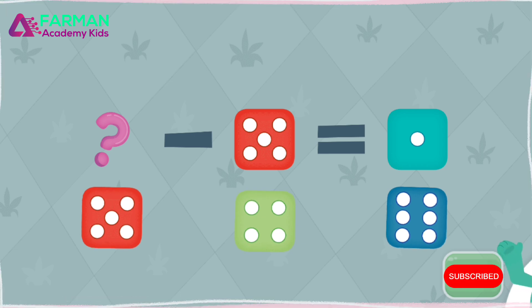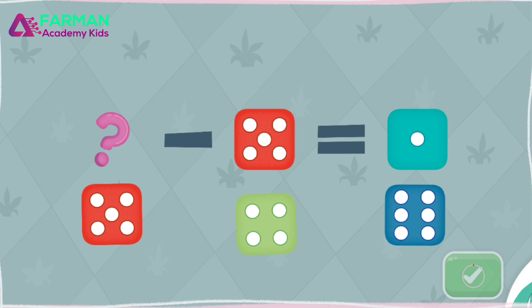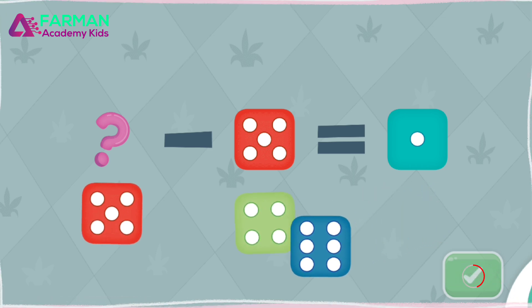What is ten minus seven? Yay! Ten minus seven is three.